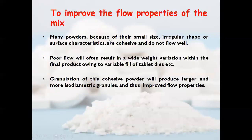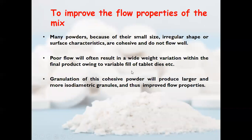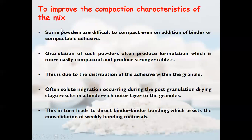To improve the flow properties of the mix — many powders, because of their small size, irregular shape, and surface characteristics, are cohesive and do not flow well. If powder flow is poor from the hopper, there are chances of weight variation in the final product owing to variable fill of tablet dies. Granulation of cohesive powder produces larger and more isodiametric granules, thus improving the flow properties of the powder.